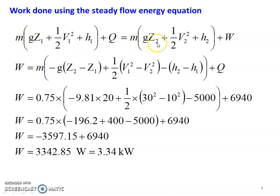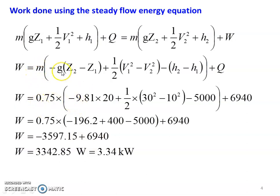Rearranging for work done: W equals M into [−g(Z2 − Z1) + ½(V1² − V2²) − (H2 − H1)] + Q. Substituting: M equals 0.75, g is 9.81, Z2 minus Z1 is 20, V1 is 30 and V2 is 10, enthalpy difference is 5 kilojoules per kilogram (5000 J/kg), and Q equals 6.94 kilojoules per second (6940 J/s). First term: minus 1296.2; second term: 400; last term: minus 5000 multiplied by 0.75 equals minus 3597.15; plus 6940.